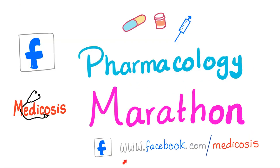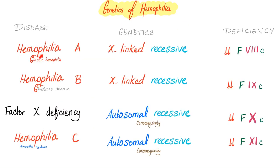Hemophilia A and B are X-linked recessive. Hemophilia A has a problem with factor 8, hemophilia B with factor 9. Factor 10 is not a hemophilia. Hemophilia C is factor 11, but now we do not call it hemophilia C, probably because it's autosomal recessive and also very rare. Hemophilias are common and X-linked recessive; these rarer deficiencies are autosomal recessive and we don't call them hemophilia.